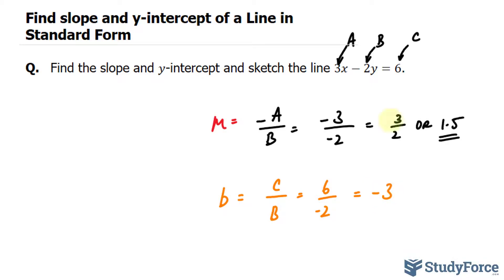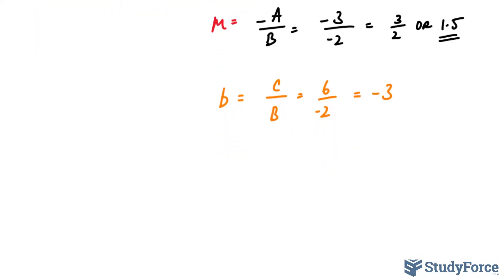You have your slope. It's right there. And you have your y-intercept. And all you need is two points to graph a line. So let me graph this really quickly for you.